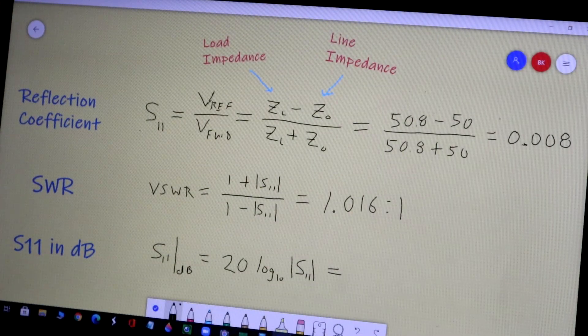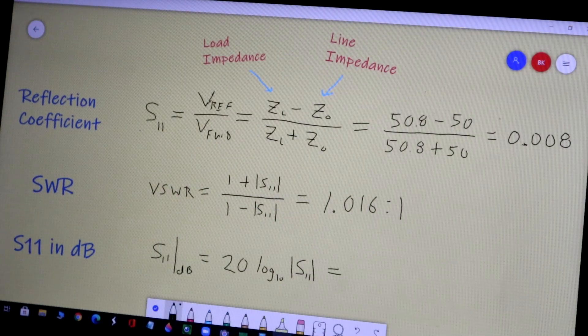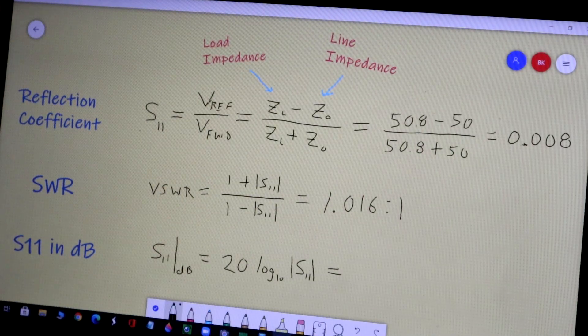Now the nano VNA doesn't read out SWR. It can, but I would encourage you to leave it in the S11 mode and read out S11 in dB, which is its default readout mode.